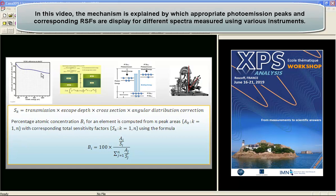The escape depth relates to the inelastic scattering of electrons that varies as a function of kinetic energy. The cross section is related to the probability of a photon of a given energy ionizing an atom. Finally, there is an angular distribution correction that relates to the relationship between the X-rays as they arrive at the sample and the direction sampling the electrons leaving the material. This relates to the angle between the X-ray source and the analyzer.